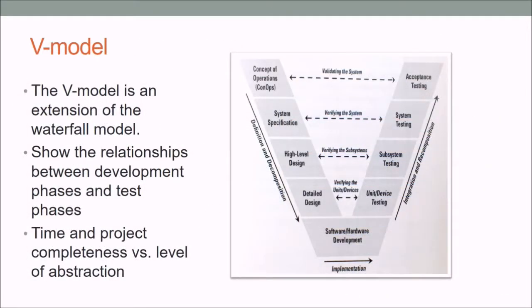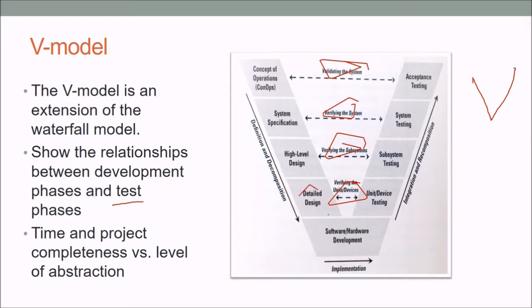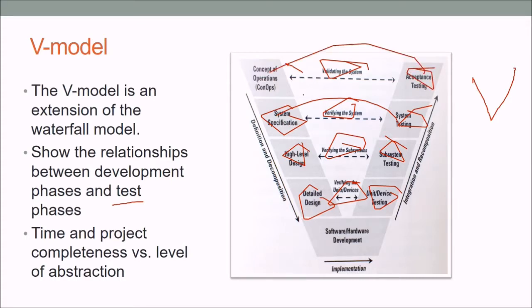The V model is an extension of the waterfall model, shaped like a V. It shows the relationship between development phases and test phases. The same phases as waterfall exist, but each development phase maps to a corresponding test phase: detail design maps to unit testing, high-level design to subsystem testing, system specification to system testing, and concept of operations or requirements to acceptance testing.